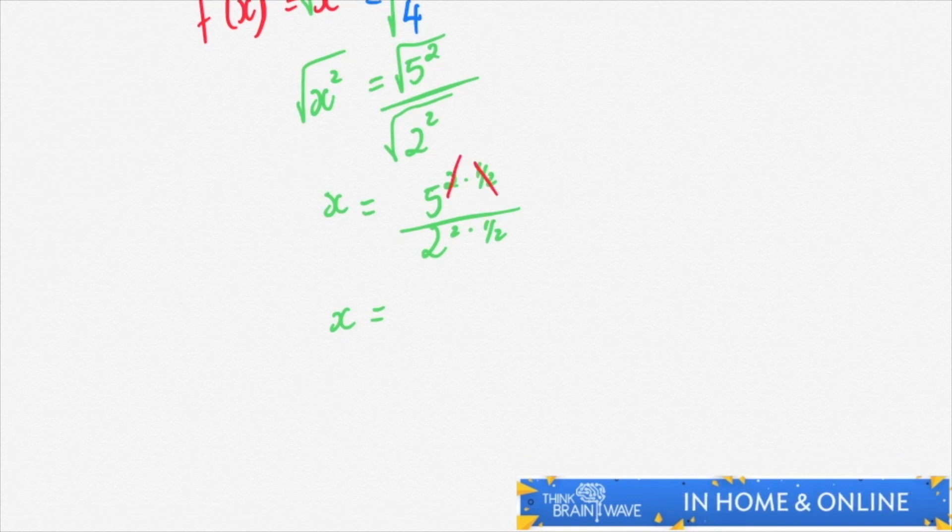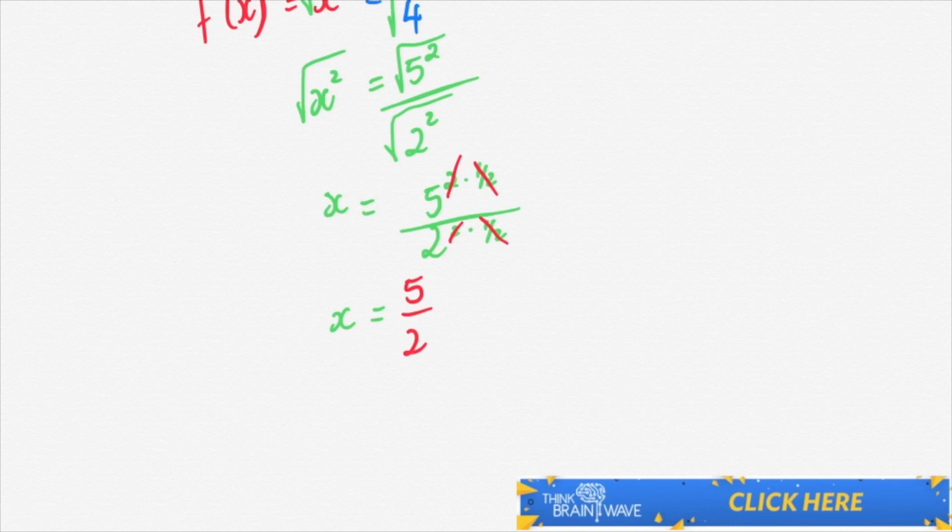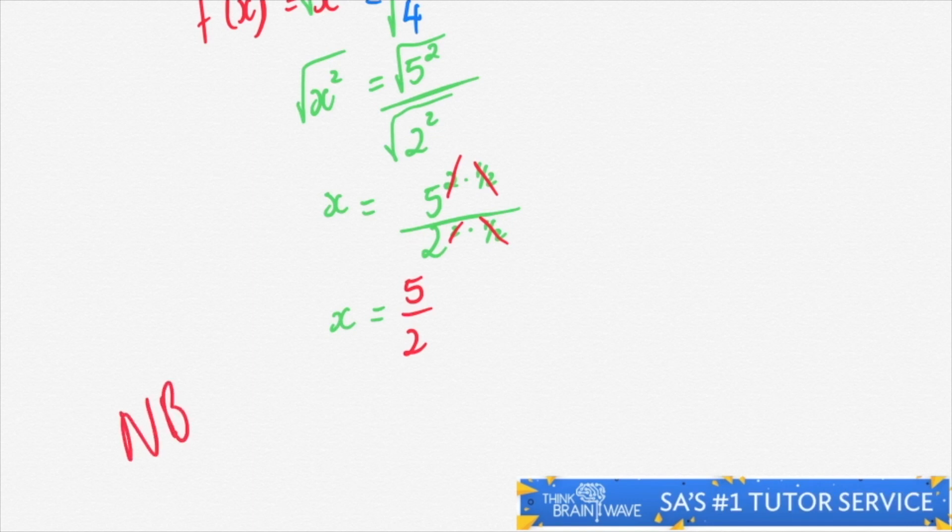We now have x equals 5 over 2, because the 2 and a half times by a half cancels out for the top and for the bottom. 2 times a half makes 1 on the 5, and 2 times a half makes 1 on the 2.